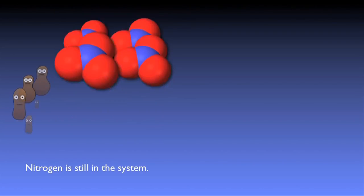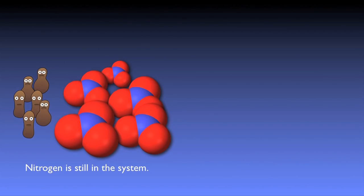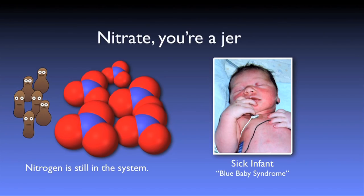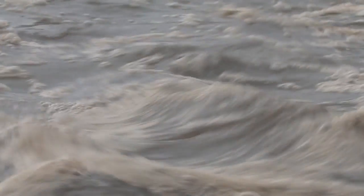After nitrification, the nitrogen is still in the system, mostly as part of the bugs and in the form of nitrate. Though not as toxic as ammonia, nitrates can still contribute to eutrophication, and if released into a source supplying drinking water, can endanger human populations — specifically infants — causing what is known as blue baby syndrome by interfering with blood oxygenation.